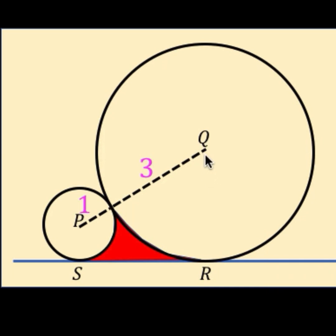First we can drop a perpendicular from the center of circle Q to the line and let's call this point of intersection point R. So the angle here is 90 degrees. Let's do the same from point P going to point S and the angle here is also 90 degrees.